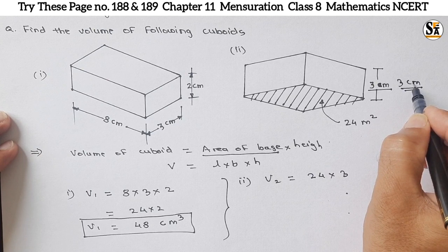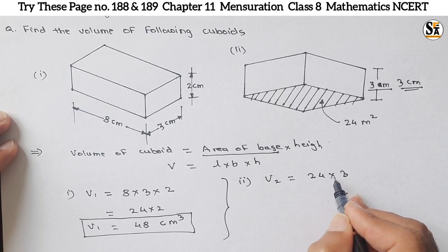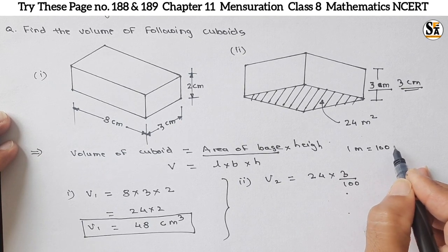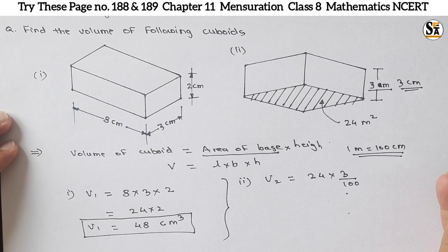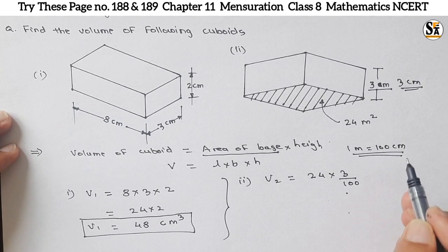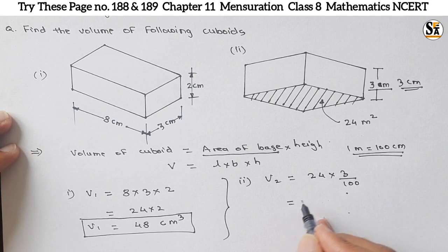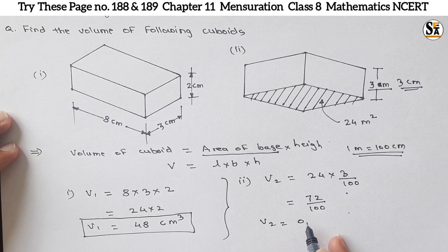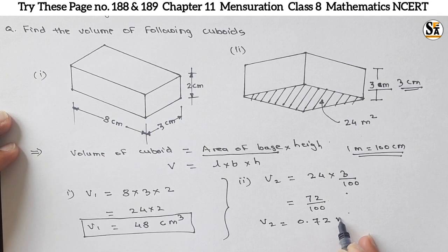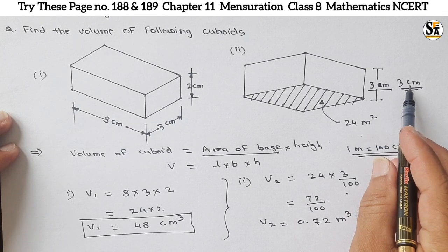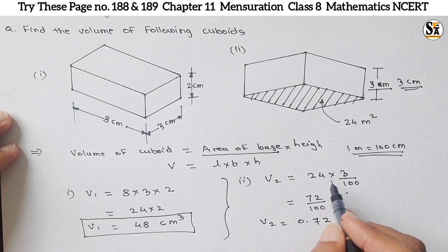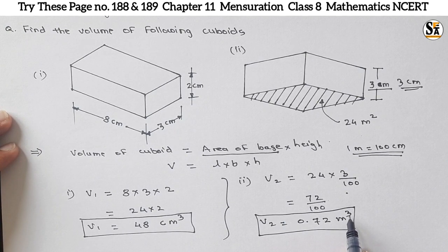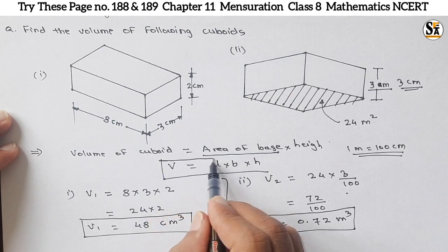Since the height is in centimeters and the base area is in meters squared, we need to convert centimeters to meters. We divide by 100 because 1 meter = 100 centimeters. So V₂ = 24 × (3 ÷ 100) = 72 ÷ 100 = 0.72 meter cube. The unit is meter cube because we converted to meters throughout.